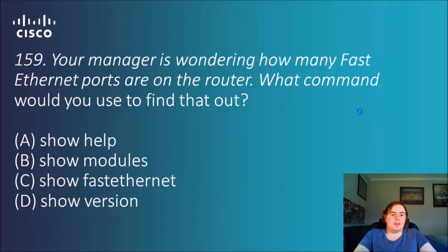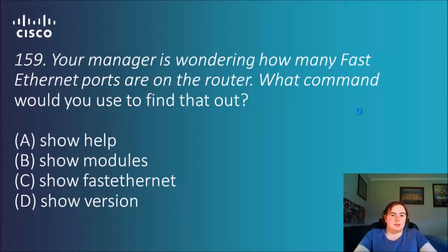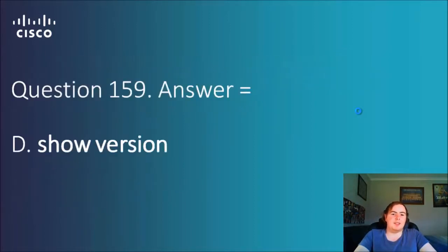Question 159: Your manager is wondering how many fast ethernet ports are on the router — what command would you use to find that out? Options: show help, show modules, show fast ethernet, or show version. The show version command is very, very helpful and has a lot of basic information. Show fast ethernet is a command, but help is more of a troubleshooting guide. So show version is the answer.